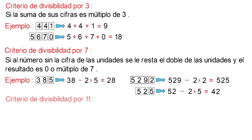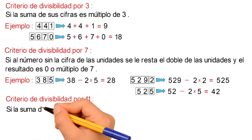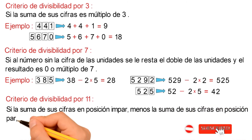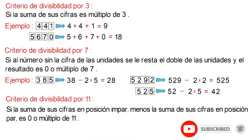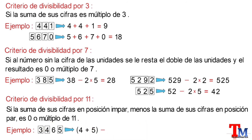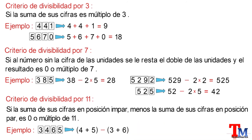En tercer lugar, tenemos el criterio de divisibilidad por 11, que se define como: un número es divisible por 11 si la suma de sus cifras en posición impar menos la suma de sus cifras en posición par es 0 o múltiplo de 11. Veamos un ejemplo. Tenemos el número 3465, donde la suma de los valores 4 más 5 menos la suma de los valores 3 más 6. Resolviendo las operaciones dentro de los paréntesis nos quedaría 9 menos 9, y resolviendo las diferencias, esto va a ser igual a 0.